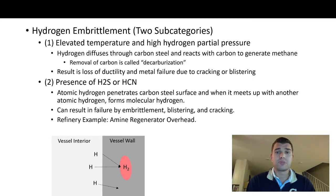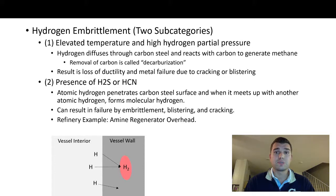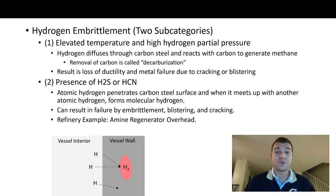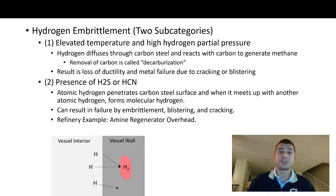The second context for hydrogen embrittlement is the presence of H2S or HCN — H2S is far more common in my experience. Atomic hydrogen, which is really just a proton, penetrates carbon steel. When it meets another atomic hydrogen it can form molecular hydrogen, which gets trapped and can no longer diffuse through the metal. Enough buildup results in embrittlement, blistering, and cracking. A refinery example is the amine regenerator overhead, which has a high H2S concentration.